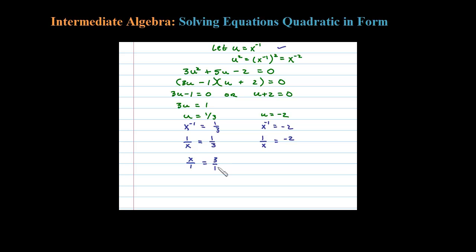then equal 3 over 1, right? Reciprocating both sides. I can do the same thing here and say then x over 1 could equal negative 1/2, or 1 over negative 2 if you want. So here's my two solutions: